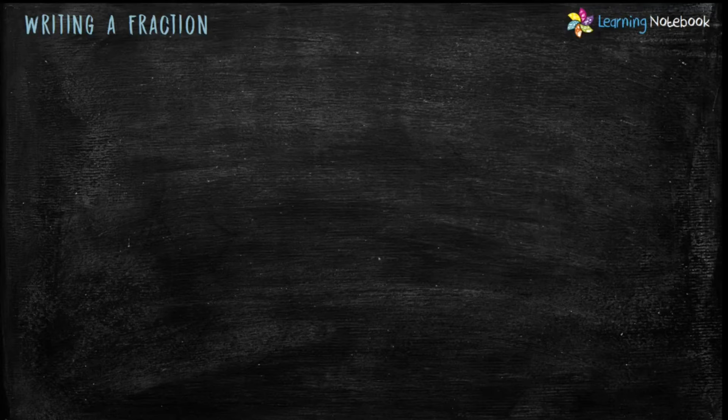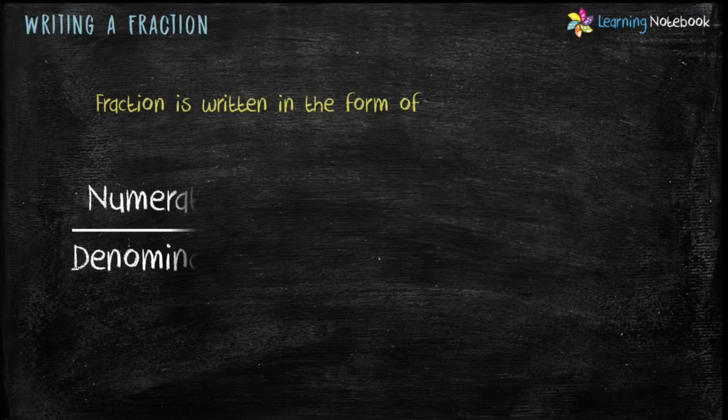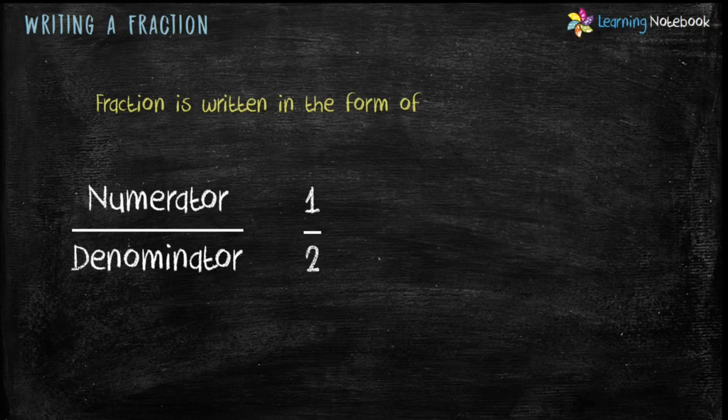Now let's see how to write a Fraction. A Fraction is written in the form of Numerator by Denominator or Numerator upon Denominator. For example, Fraction 1 by 2. Here, Denominator is 2 and Numerator is 1.